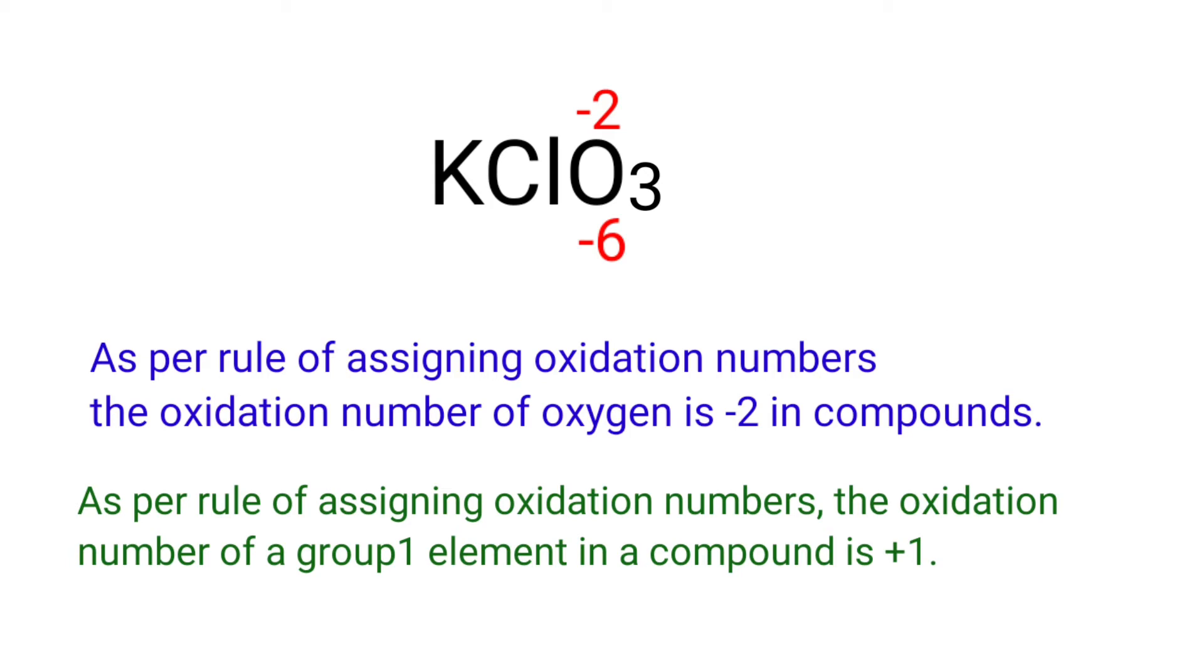As per rule of assigning oxidation numbers, the oxidation number of a group 1 element in a compound is plus 1. Potassium is a group 1 element, so we can write the oxidation number of potassium is plus 1.